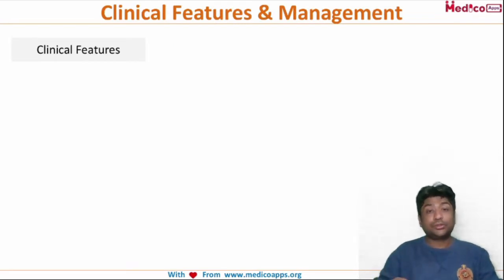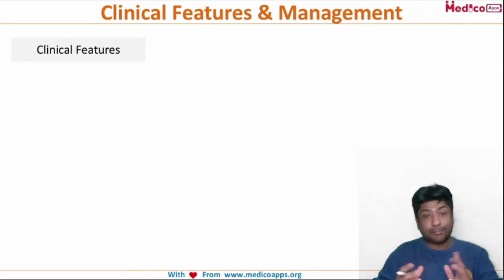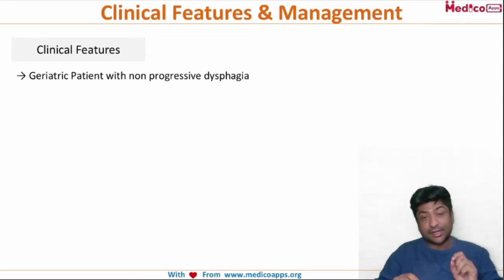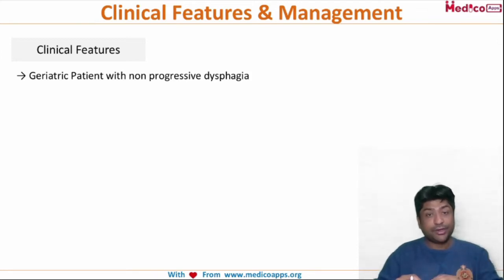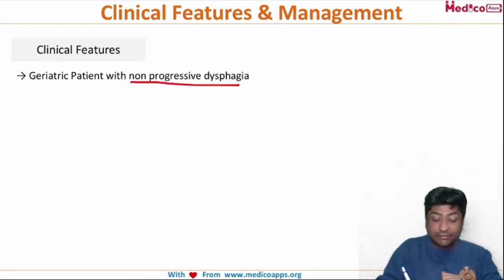How will the patient present? This patient will be a geriatric patient, because those potential weaknesses are accentuated with the weakening of the muscles forming that area. The primary clinical feature will be dysphagia. Whenever a geriatric patient comes with dysphagia, you may start thinking in terms of esophageal cancer, which is very common. The difference here is this patient will have relatively non-progressive dysphagia.